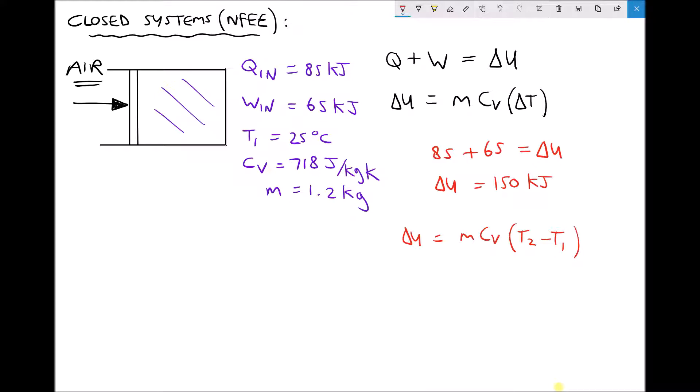The first thing I can do to each side is divide by M times CV. I'll be left with delta U over MCV equals T2 minus T1. Then the next thing I need to do to each side to get T2 on its own is just add T1. So I get T2 equals delta U over MCV plus T1.